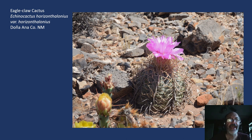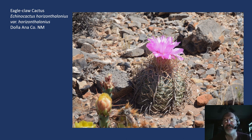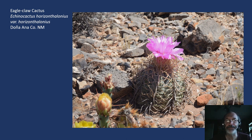Now we move into the Echinocactus. This is Echinocactus horizonthalonius, variety horizonthalonius — quite common in our area. They're an interesting cactus in that they respond to rain for blooming, so anytime we have precipitation, all of these seem to bloom at the same time. I've found in my yard that if I give them a good watering every few weeks, I can get blooms on occasion. Very stout spines on this one.